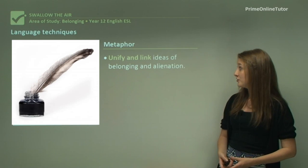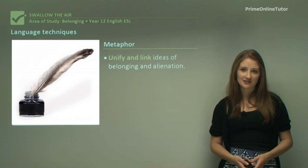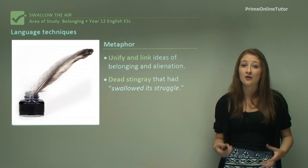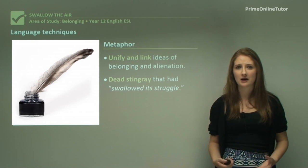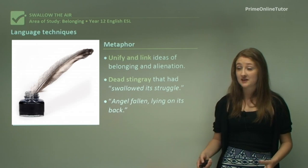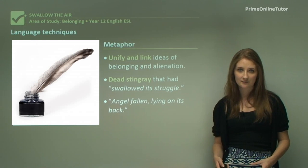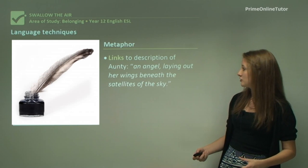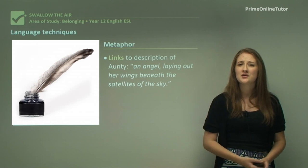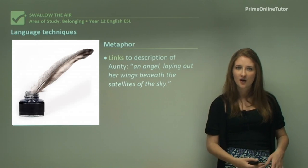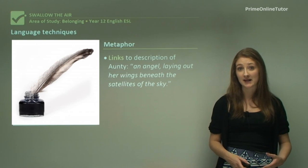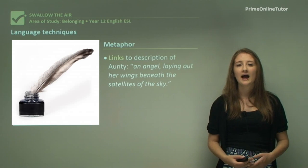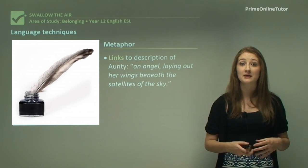The metaphor is also used to unify and link ideas about belonging and alienation. 'The dead stingray that had swallowed its struggle' — there's that indication that it has both metaphorically and physically swallowed its hardships in life. You also have the idea that the stingray is 'an angel fallen lying on its back', which compares to the description of the aunt later on — 'an angel laying out her wings beneath the satellites of the sky.' This ongoing metaphor becomes almost a motif of angels, which is very symbolic, spiritual, and indicative of the idea that Aboriginal people have a strong sense of spirituality and something beyond our world.